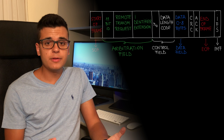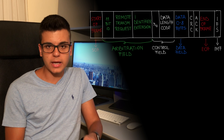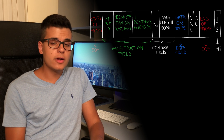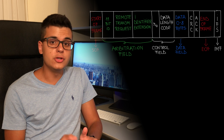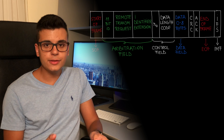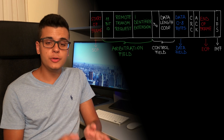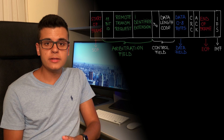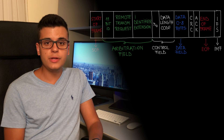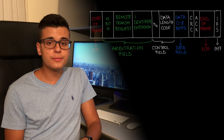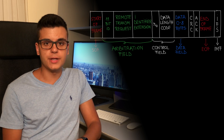The end of frame is a 7-bit field which signals the end of the CAN frame and also disables bit stuffing, which I'll explain in just a moment. The interframe space is a 7-bit field used as a delay so that receiving nodes can move the information they just received to a separate buffer for further processing.